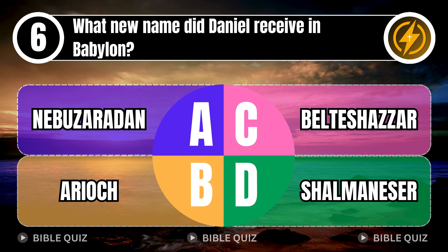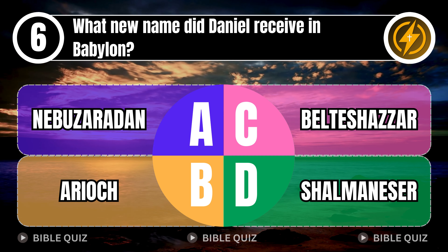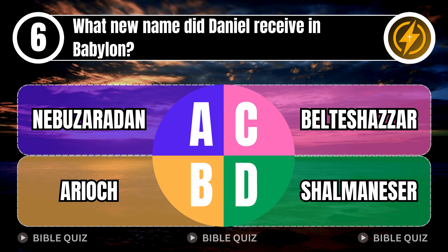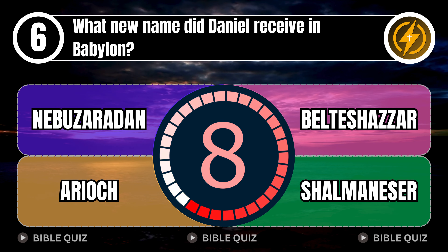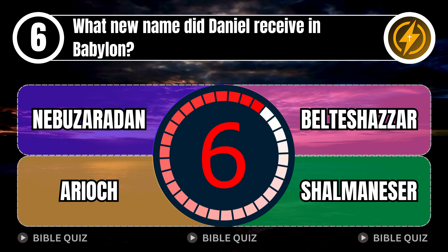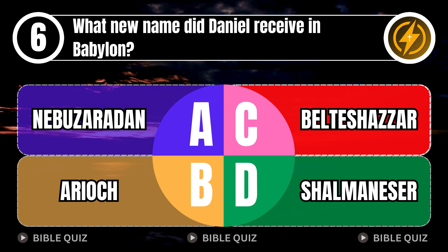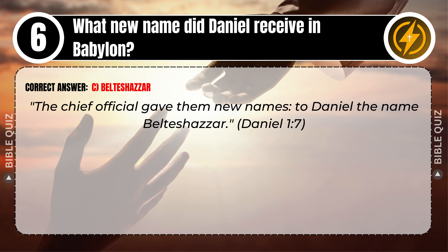Question 6: What new name did Daniel receive in Babylon? A. Nebuzarodon. B. Ariok. C. Belteshazzar. D. Shalmaneser. Correct answer: C. Belteshazzar. Explaining the Bible — the chief official gave them new names; to Daniel, the name Belteshazzar. Daniel 1 verse 7.